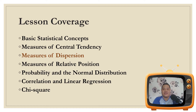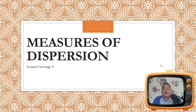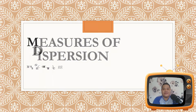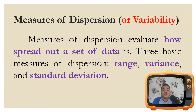Today we will discuss measures of dispersion. Lesson Coverage 3: Measures of Dispersion or Variability evaluate how spread out the data is. It concentrates on how scattered the data is from highest to lowest value, and even the distance of each data entry to the mean. There are three basic measures of dispersion: the range, the variance, and the standard deviation.